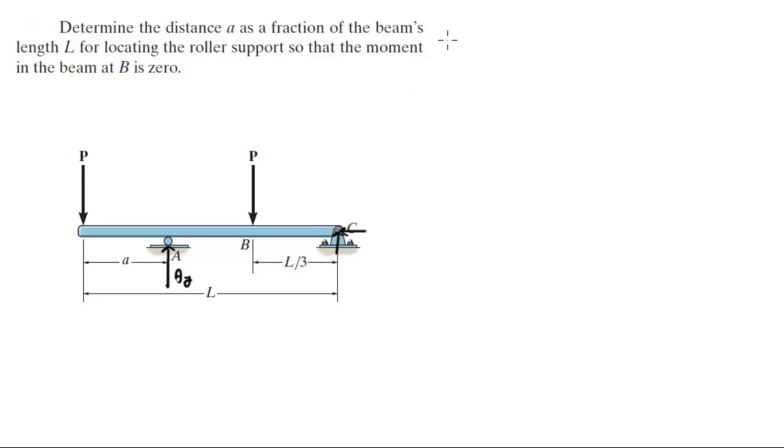The first thing we're going to do is find AY. To find AY we're going to assume that clockwise is positive for the sum of the moments at C.